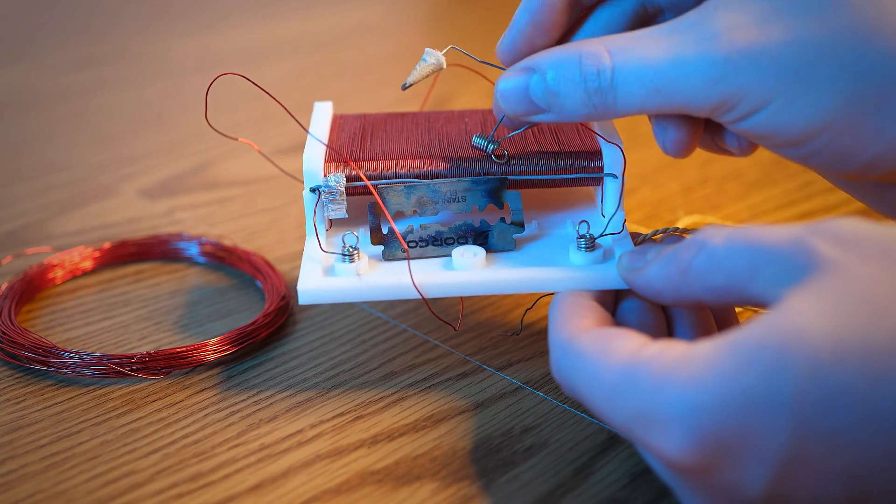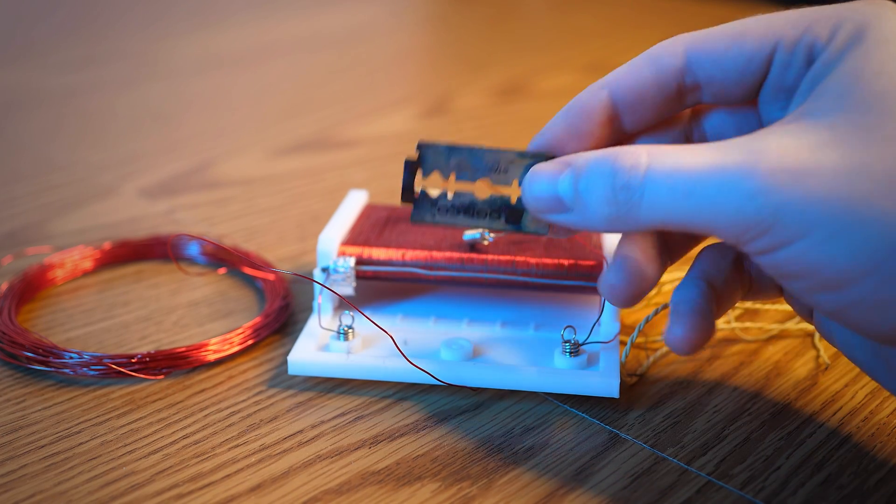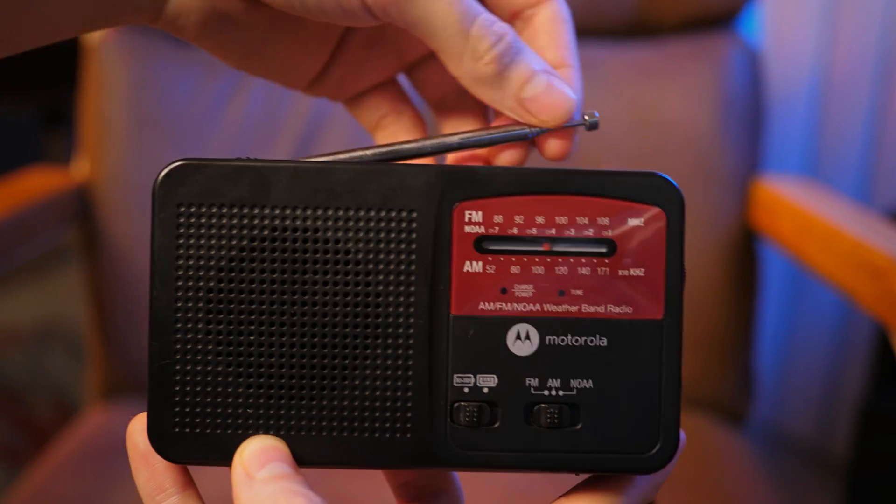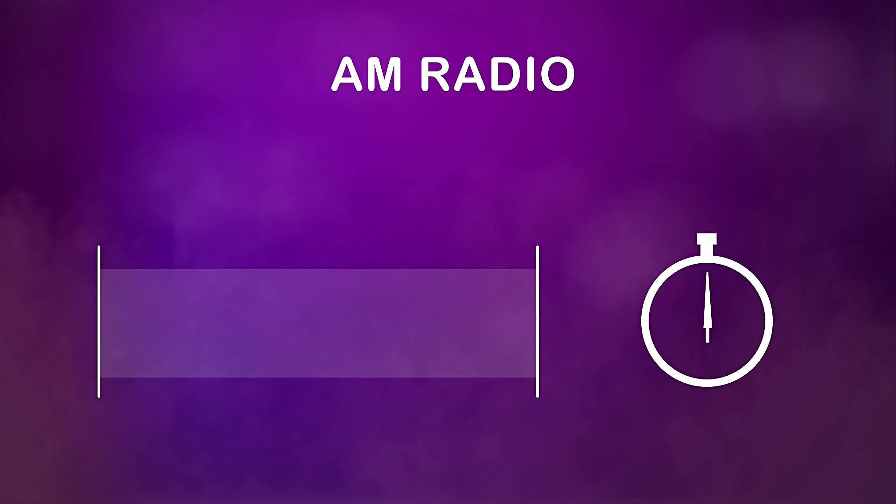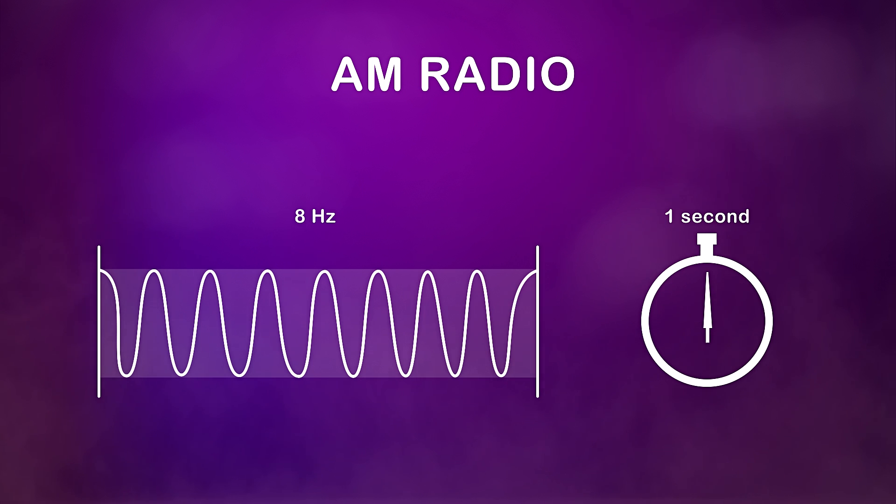So let me explain AM radio and how this can function without a battery. A radio wave is an electromagnetic wave that oscillates back and forth. That speed is measured in a unit called Hertz, which just means how many times it went back and forth in one second. This wave has a frequency of 8 Hertz.